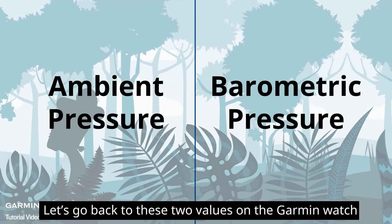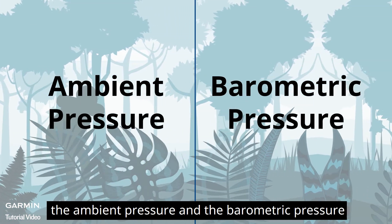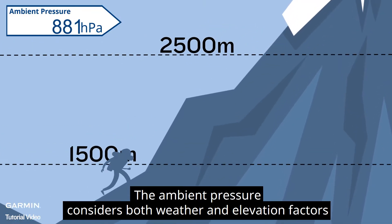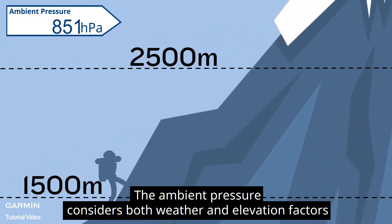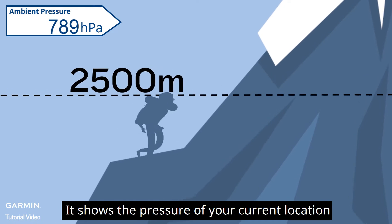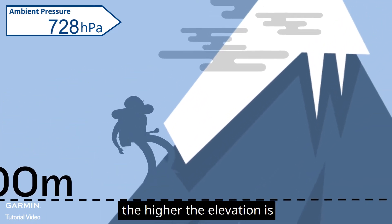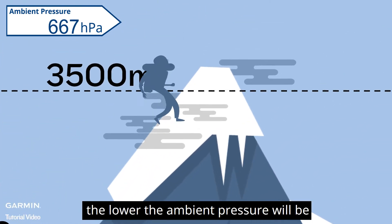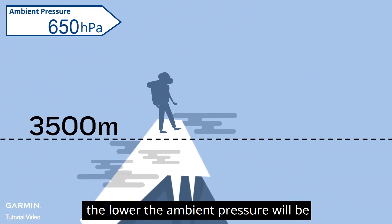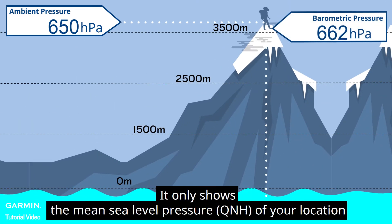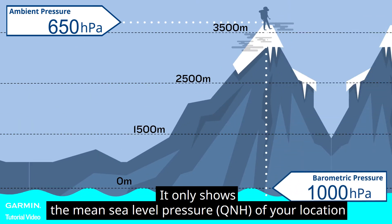After understanding these two concepts, let's go back to the two values on the Garmin watch: the ambient pressure and the barometric pressure. The ambient pressure considers both weather and elevation factors — it shows the pressure of your current location, so the higher the elevation, the lower the ambient pressure will be. The barometric pressure doesn't count the factor of elevation; it only shows the mean sea level pressure of your location.